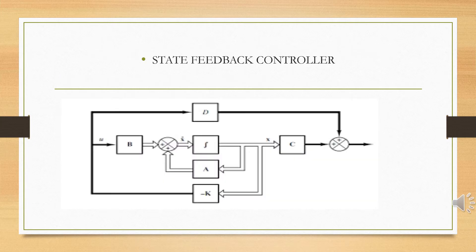State feedback control can be represented as a block diagram. Starting with x-dot, we have an integrator block. The equation is x-dot equals Ax plus Bu. The state feedback controller is a function of x, so u equals minus K into x.